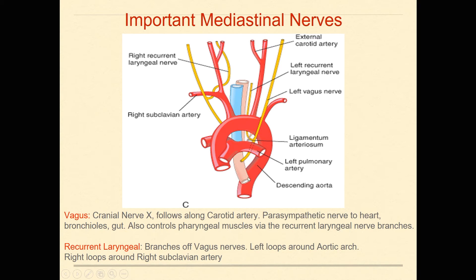The vagus nerve then continues on and runs along the anterior side of your heart. So that could be another consideration in a surgery involving the front part of your heart, such as a coronary bypass — you've got to watch out for a nerve, and at that point you're really thinking of the vagus nerve.